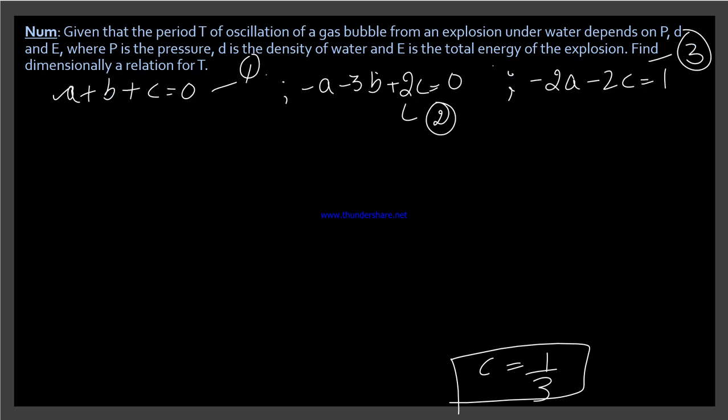Now we already have these equations: first, second, and third. Now put the value of c in equation number 3. When we put its value here, we get minus 2a minus 2 into 1 over 3 equals 1. When we take this term to the other side, we get a positive answer.